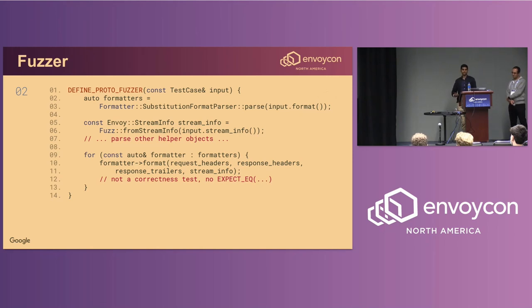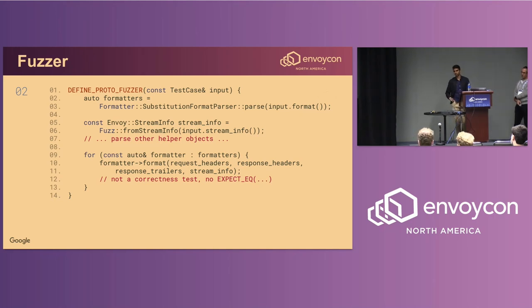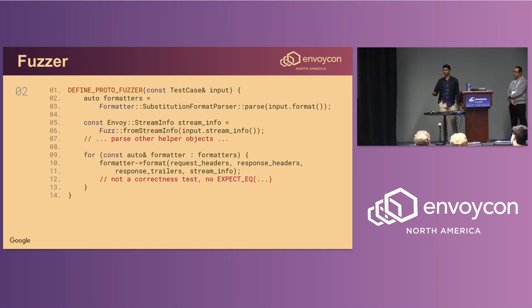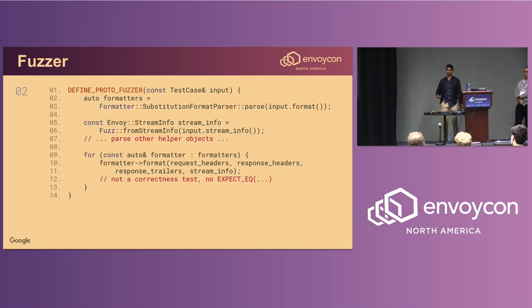We have a working fuzzer, but we haven't done the last step yet: adding the initial corpus. The initial corpus is important for the fuzzing engine to generate realistic values. For example, we indicated to the fuzzer to generate random access log strings, but we never told the fuzzing engine what a valid access log format directive looks like. So the fuzzing engine would have to do a lot of trial-and-error brute force. We can optimize this by adding the initial corpus.